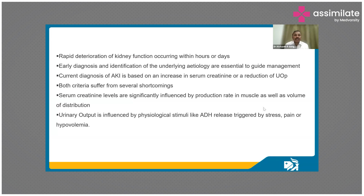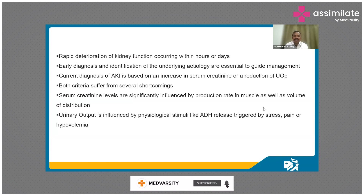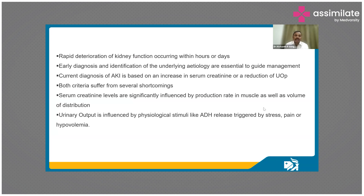Rapid deterioration of kidney function occurs within hours to days, and early diagnosis and identification of the underlying etiology is essential to guide management. The current diagnosis of AKI is based on two parameters: serum creatinine and reduction of urine output. Both these criteria are influenced by many other factors beyond kidney function. Serum creatinine is influenced by production rate and volume of distribution, since we measure it as a concentration in the blood. Multiple factors also influence the volume of urine produced on an hourly or daily basis.